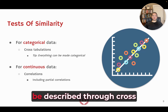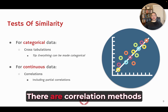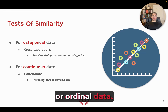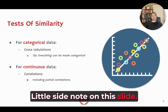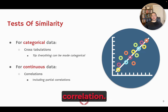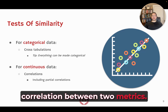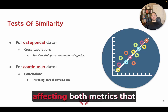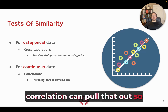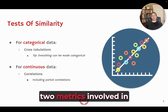There are correlation methods for categorical data, but you have to know whether you're using nominal or ordinal data. One of the least used but most powerful methods of correlation is partial correlation. When you look at a traditional correlation output, you're looking at the correlation between two metrics. There are other things affecting both metrics, and partial correlation can pull that out so that what you're left with is as pure as possible a correlative relationship between the two metrics.